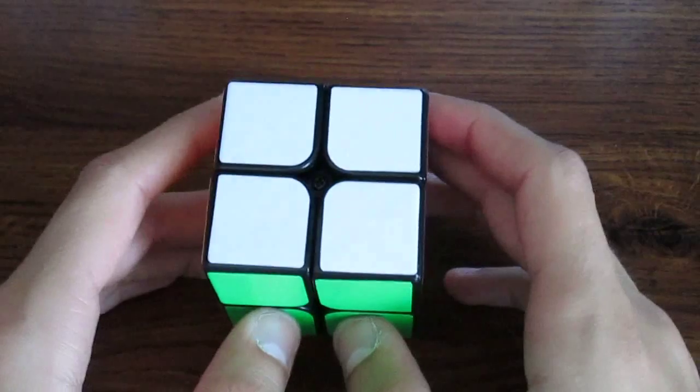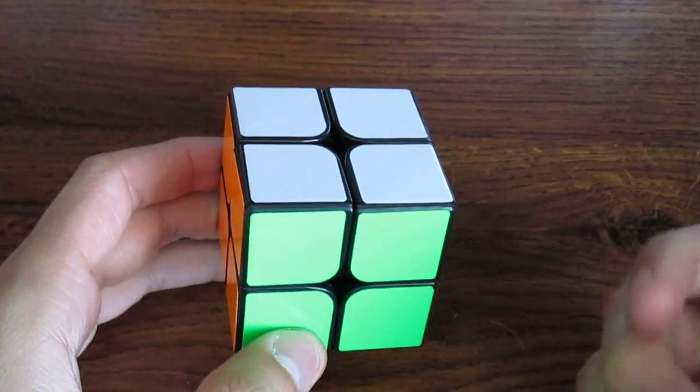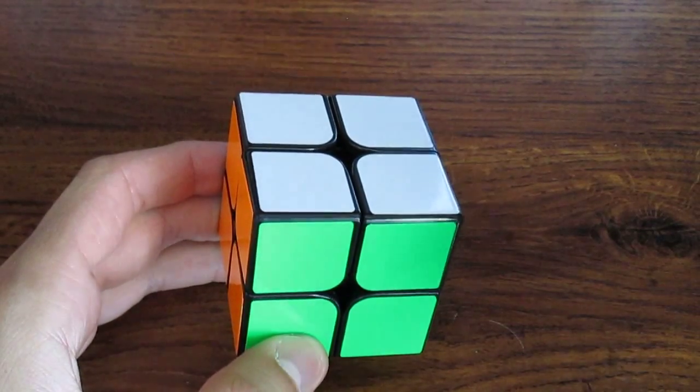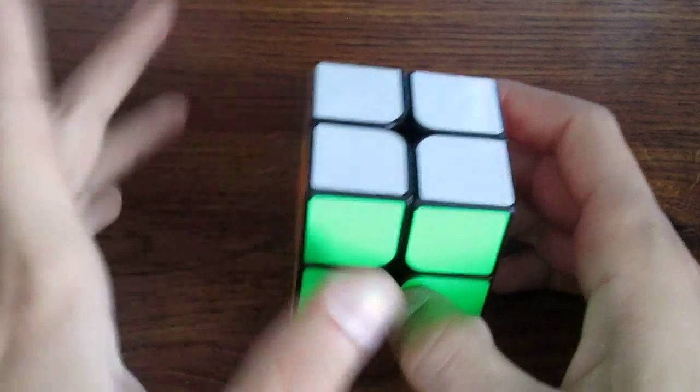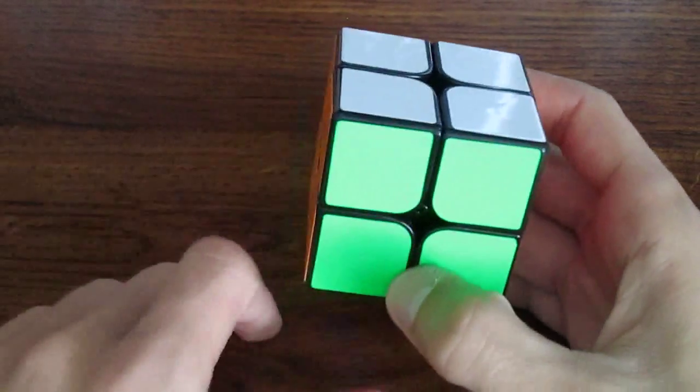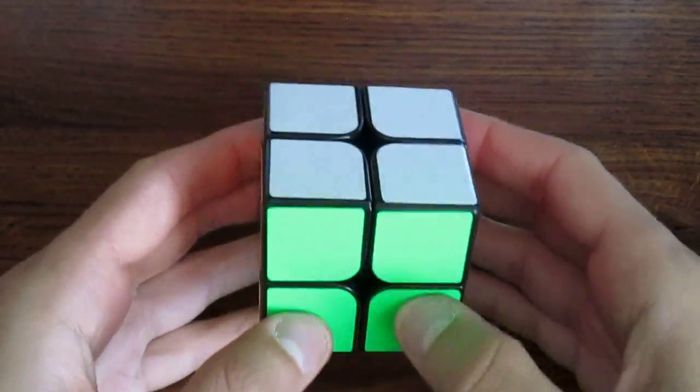The scrambles that I'm going to be using are on my iiTimer app on my iPad, and I will post the scrambles in the description. So go ahead and check those out, and you can follow along. I'm going to scramble my puzzle with the white on top and the green facing me. So let's do the first one.